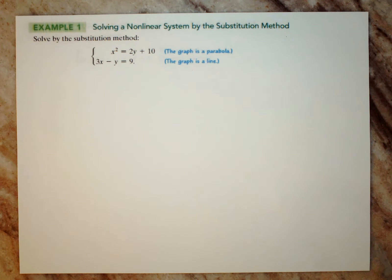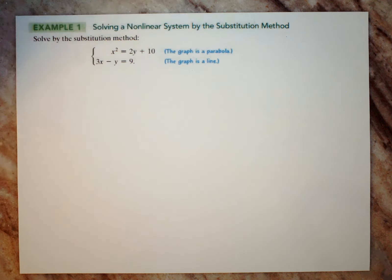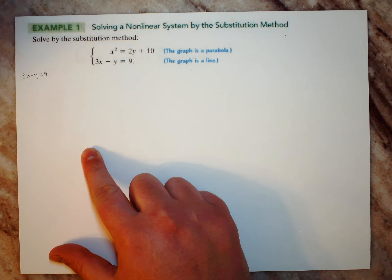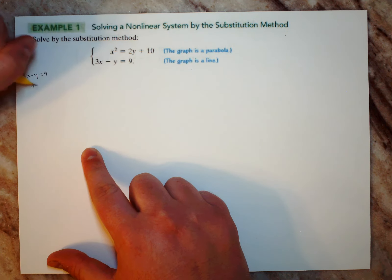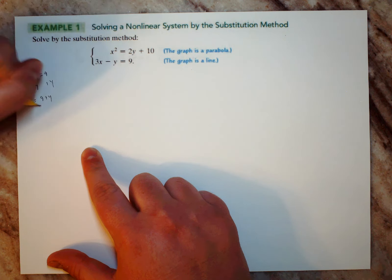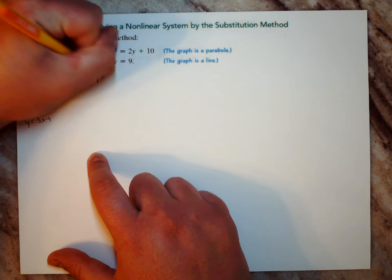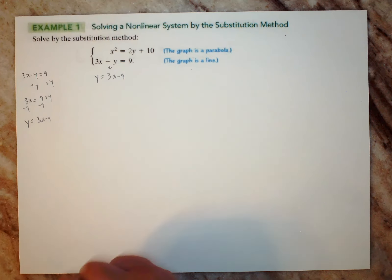Example 1: solve a nonlinear system using the substitution method. Substituting means replacing one variable with another. We have x and y so we want to get rid of one. I'm going to rewrite 3x − y = 9 so that it says y equals something. Adding y and subtracting 9 gives us y = 3x − 9.